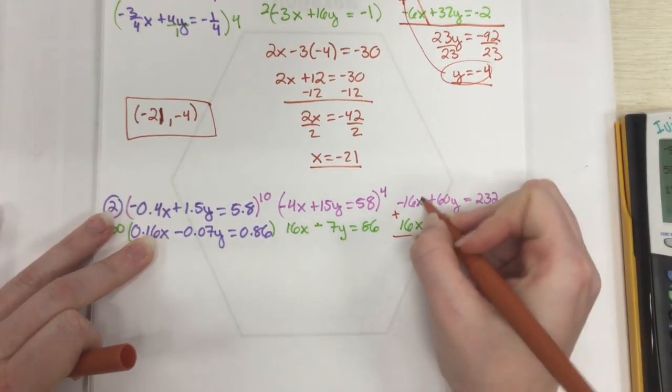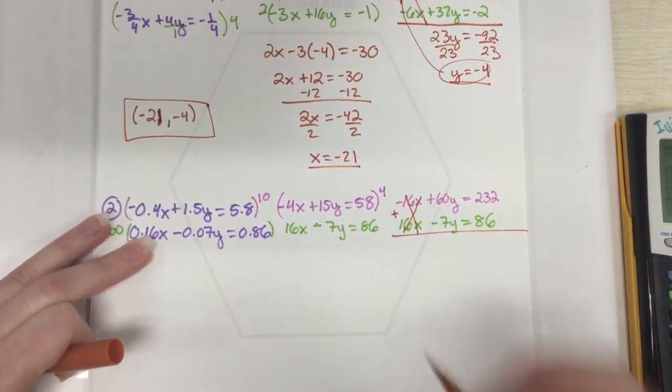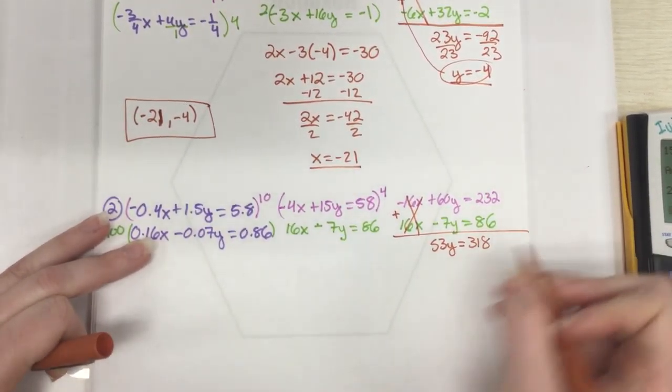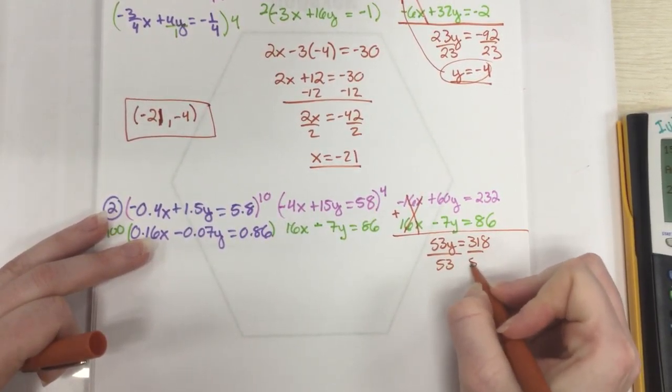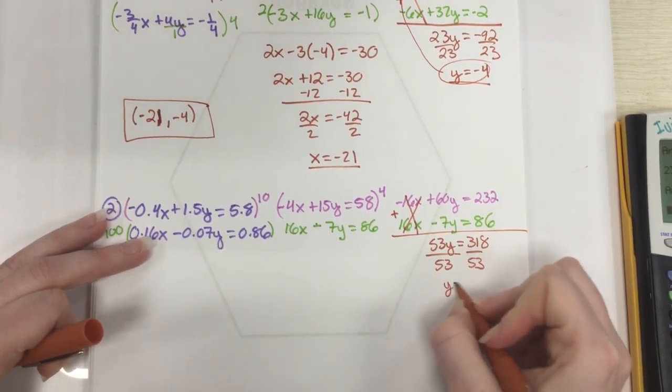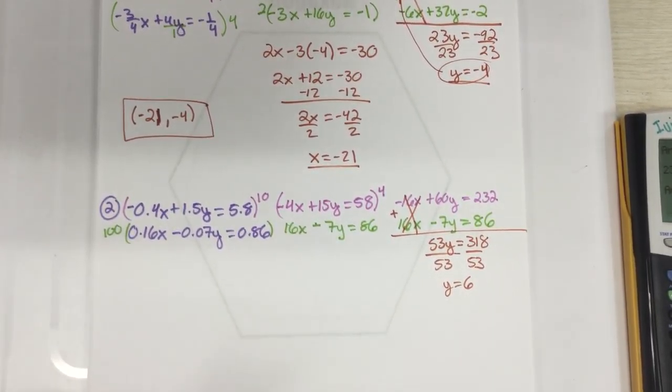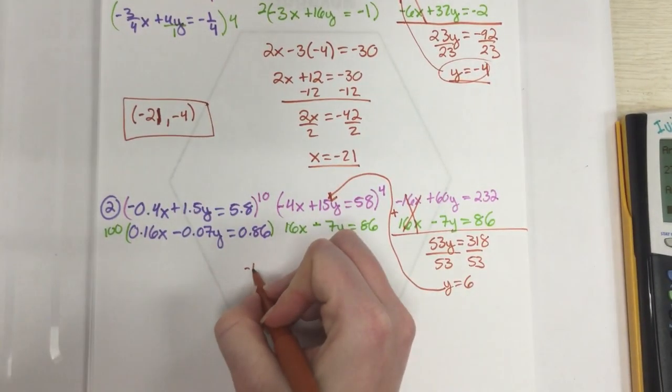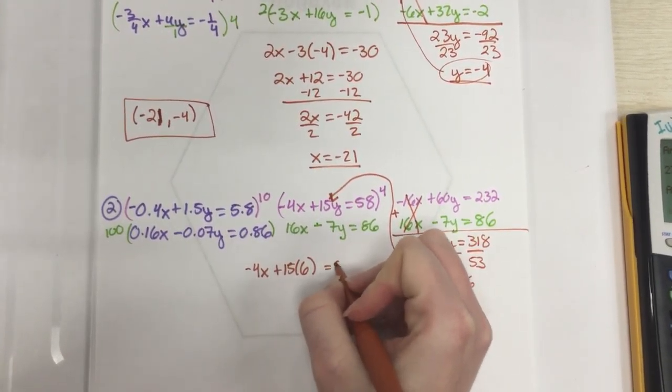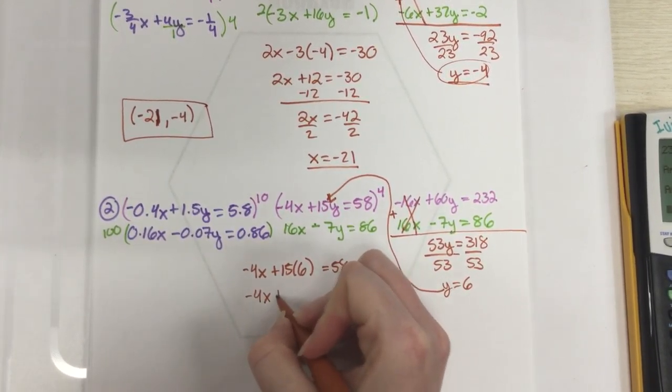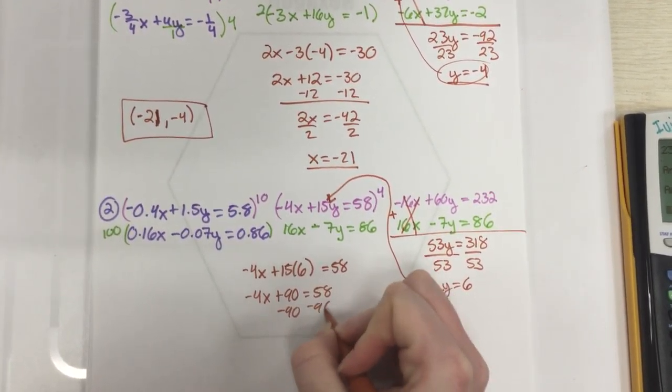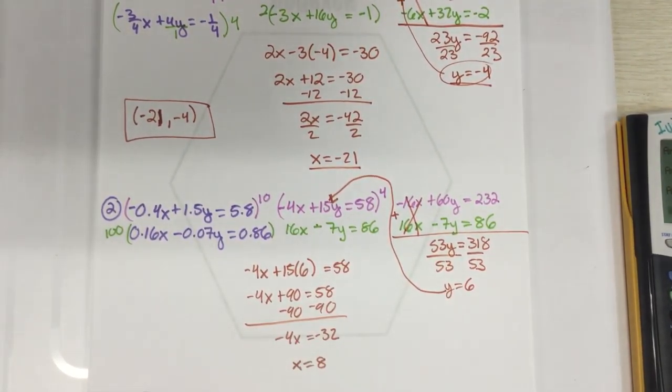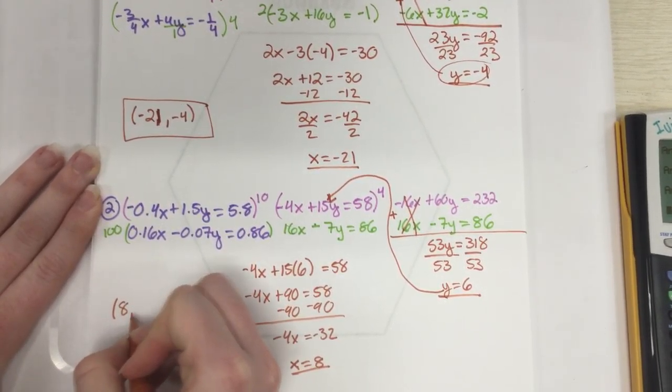Okay. So I'm going to add the two equations together. And that becomes 0. And then I have 60 minus 7. Which just becomes 53y. And 232 plus 86. Which will become 318. So I'm going to go ahead and solve for y in this case. So I'll divide by 53. And you get y equals 6. And then you want to go ahead and solve for x. And so just pick an equation that makes most sense to you. I would probably pick this one right here. Just because it seems to be the smaller numbers. So I get negative 4x plus 15 times 6 equals 58. And so negative 4x plus 90 equals 58 minus my 90 equals a negative 32. So therefore x will be 8. So I have an x equals. I have a y equals. So my point is 8 comma 6.